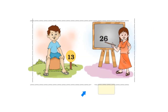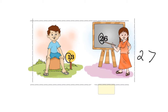Which is the bigger number? I see two numbers in this picture: 13 and 26. Which is the bigger number? In the tens place of 13 I see 1, and in the tens place of 26 I see 2. I know that 2 is bigger than 1. So 26 is the bigger number.